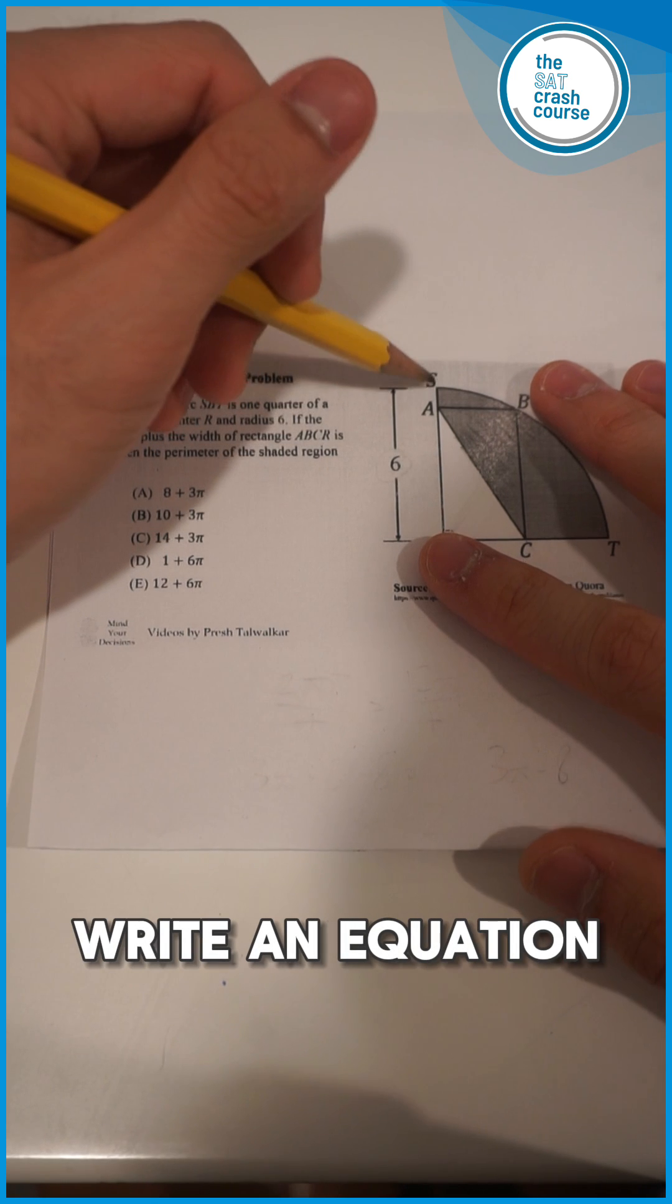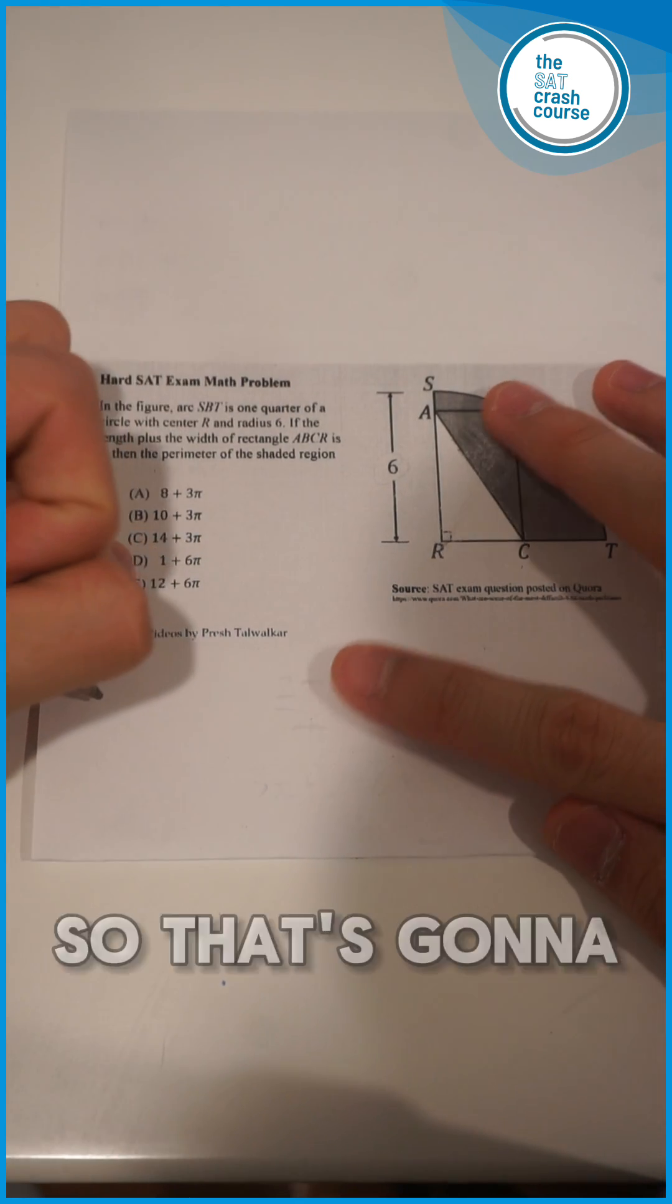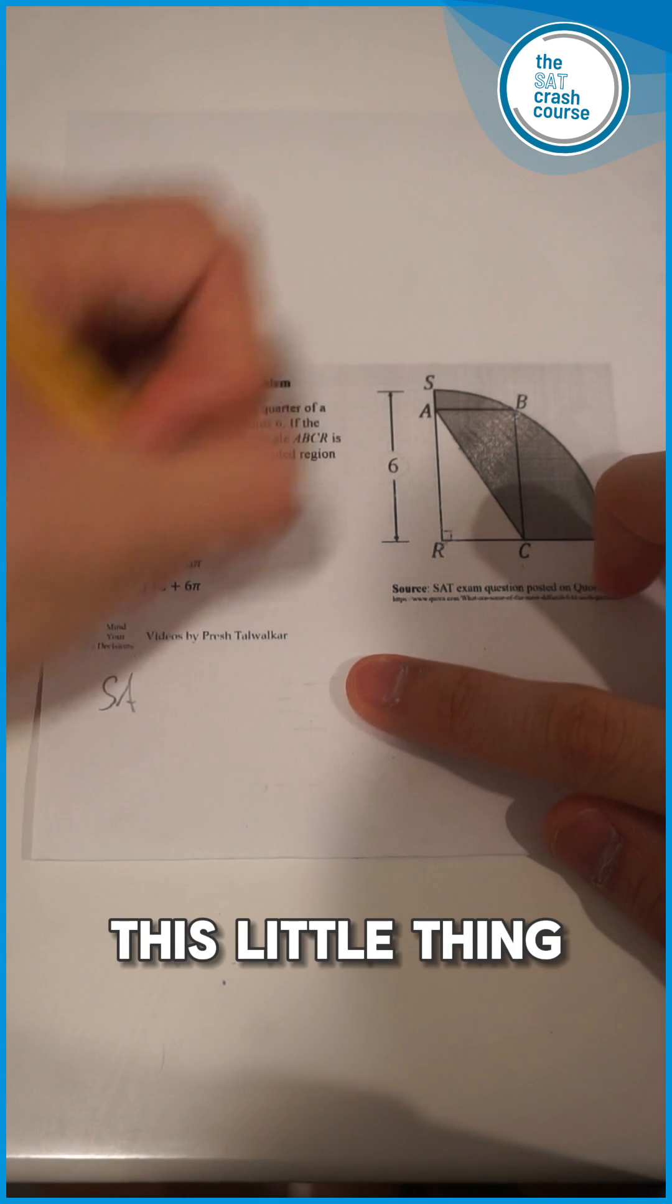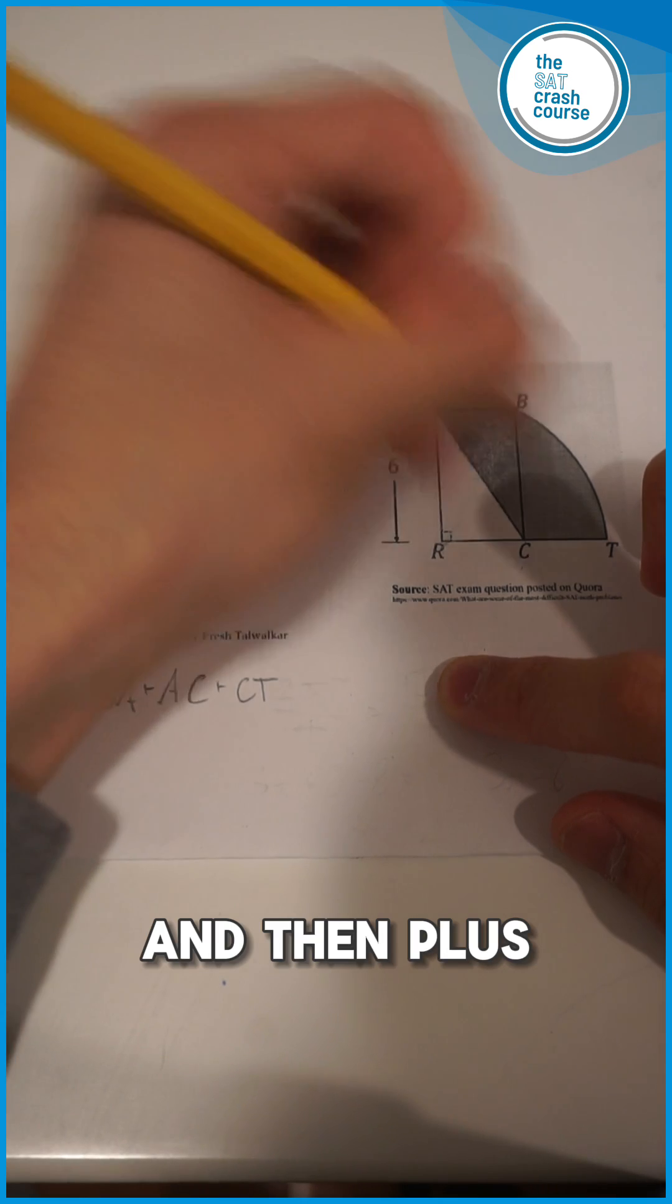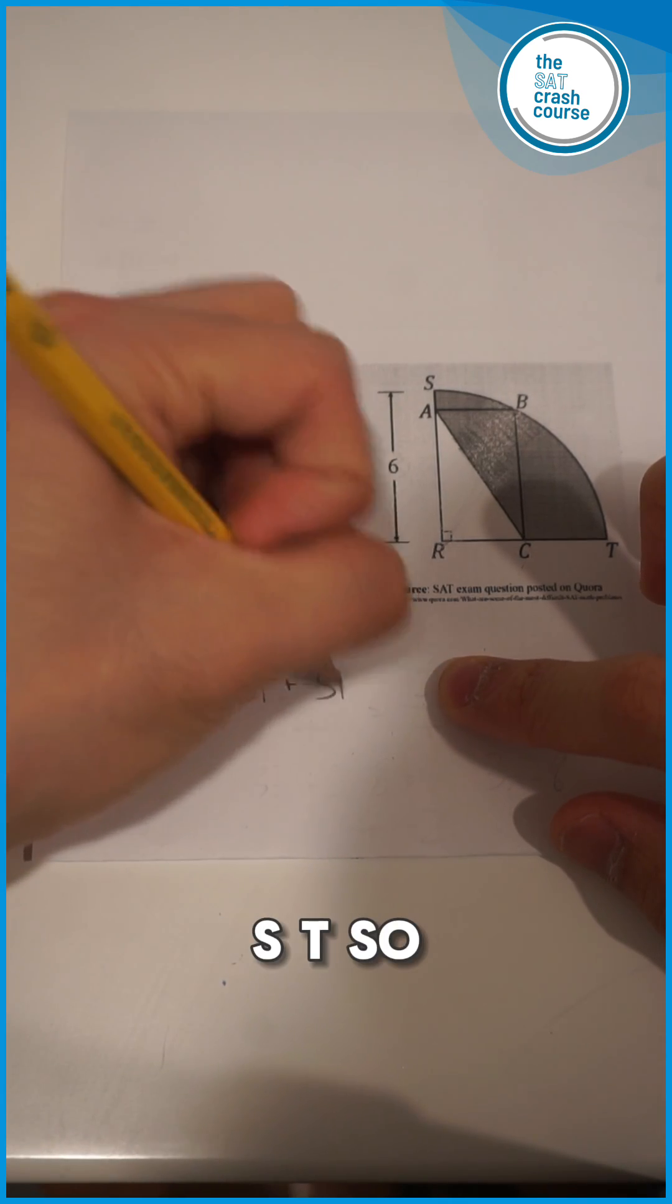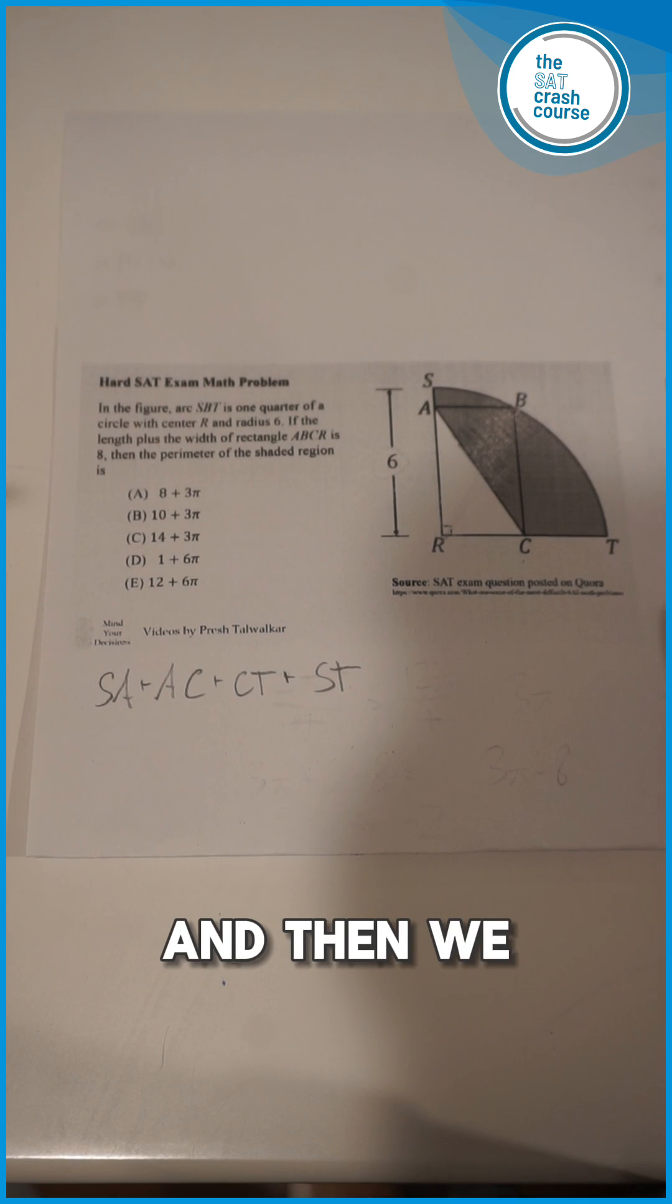First, we need to actually write out an equation for what the perimeter is going to be. We just have to add up all the sides together. So that's going to be SA plus AC diagonal plus CT and then plus the arc ST.